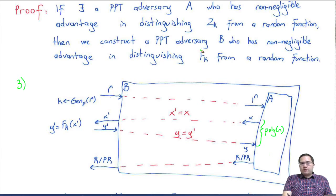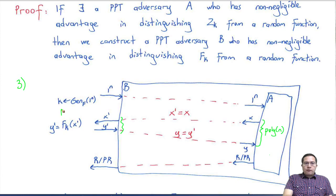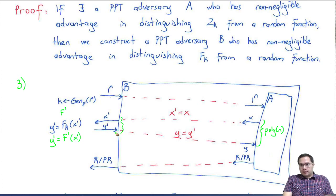The game B is playing: B is trying to break f, so this is the PRF distinguishing game for f. B is given the security parameter and can ask polynomially many queries. It gives x prime and receives y prime, which is either f_k(x prime) for a randomly generated key k, or f prime(x prime) for a random function f prime drawn from all functions with the same domain and range as f_k. B must guess whether a pseudorandom or truly random function produced y prime.